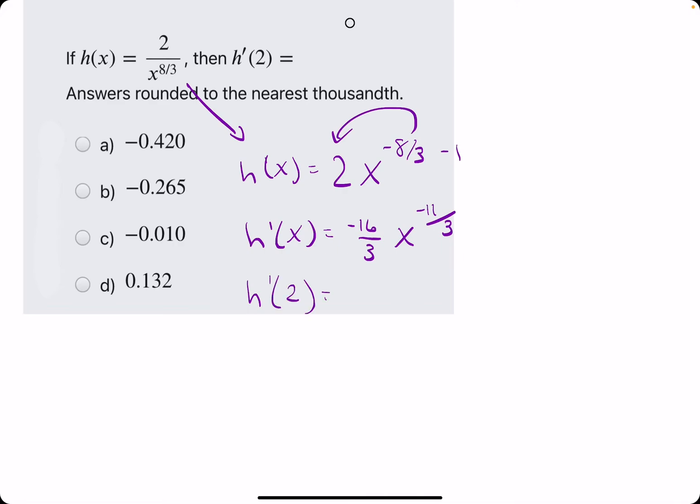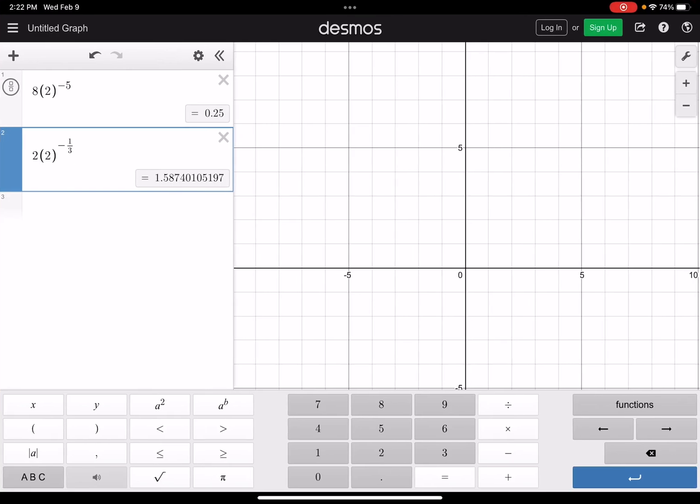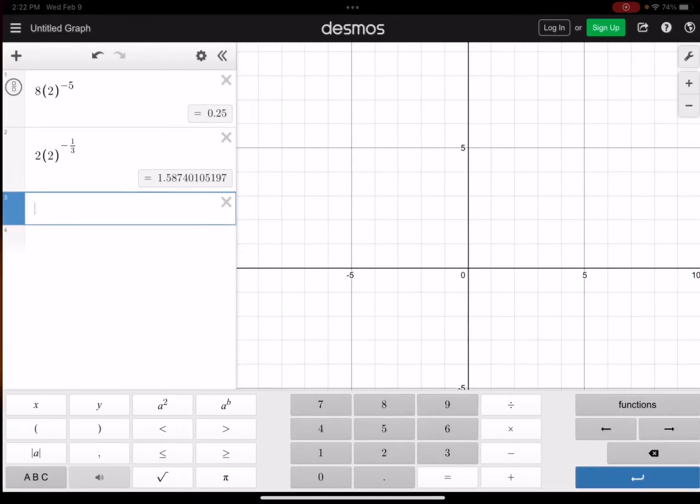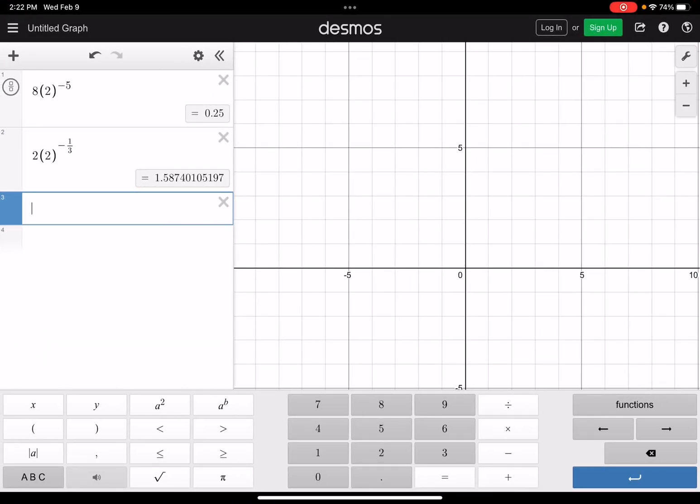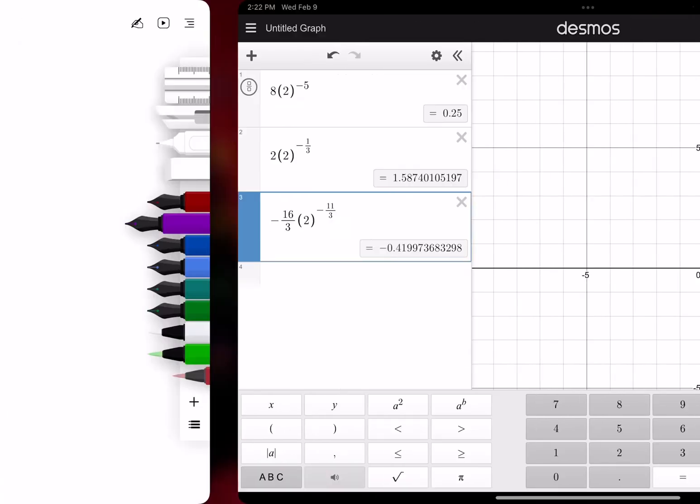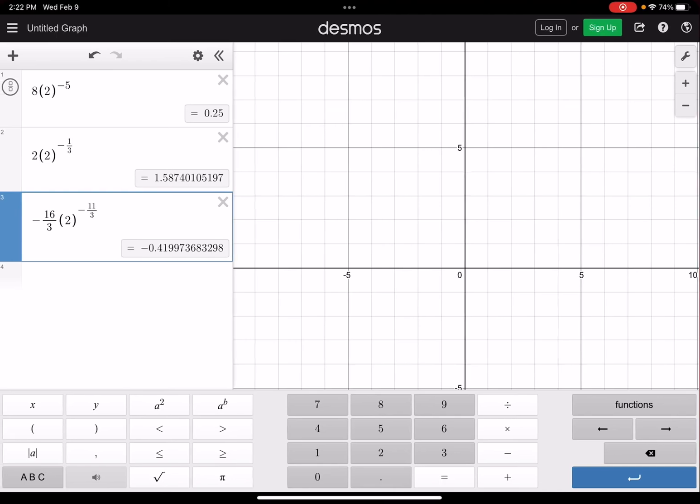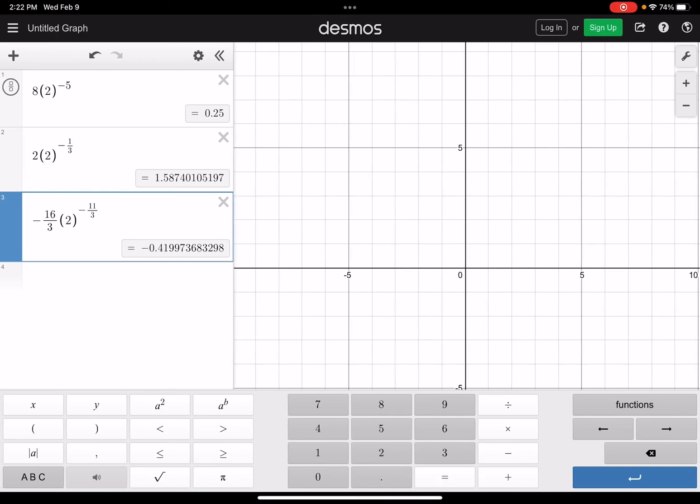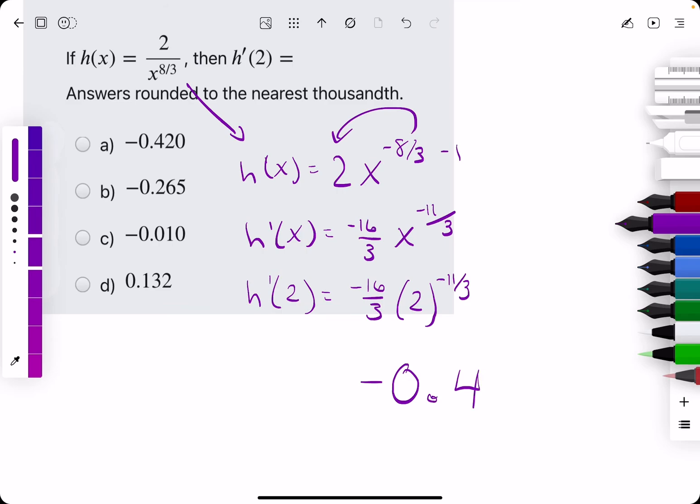Again, we are plugging in 2. So we have negative 16/3 times 2 to the negative 11/3, I believe. So we get negative 0.199 or negative 0.42.